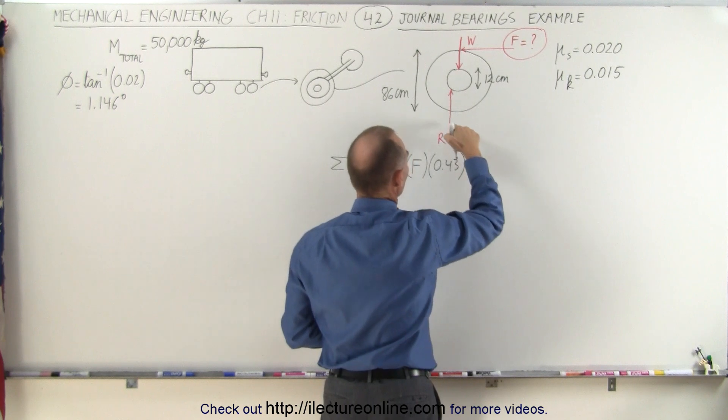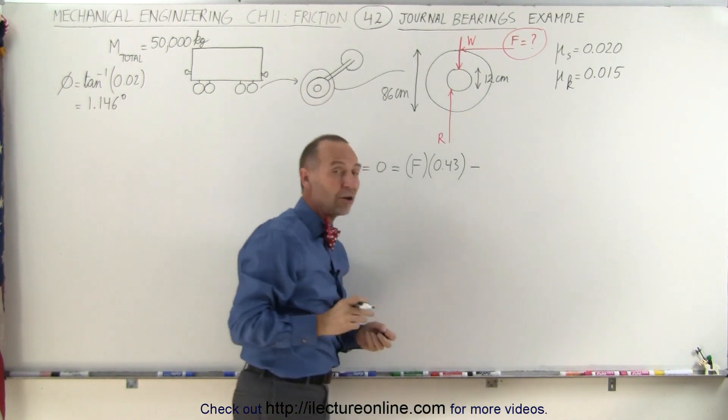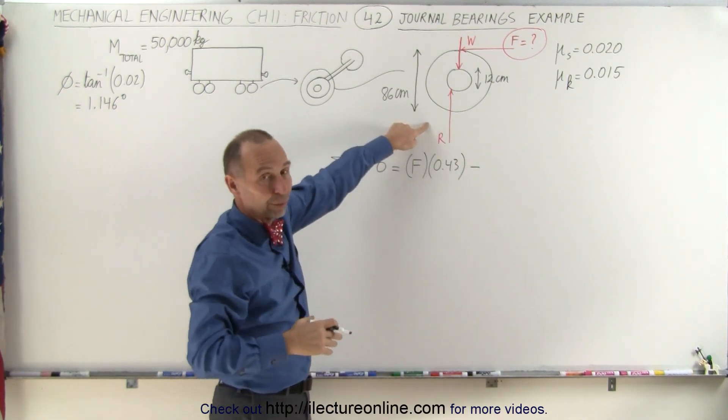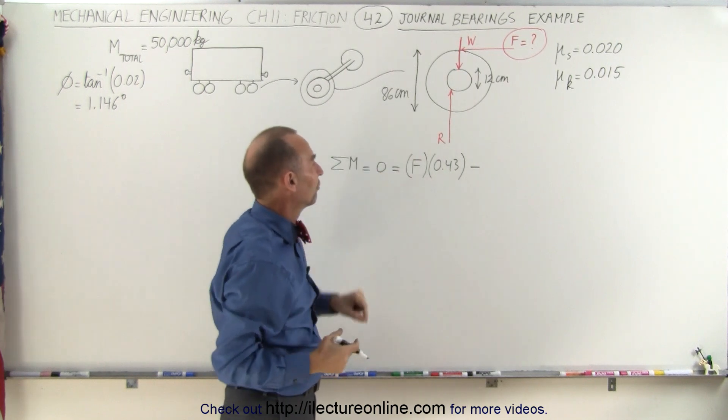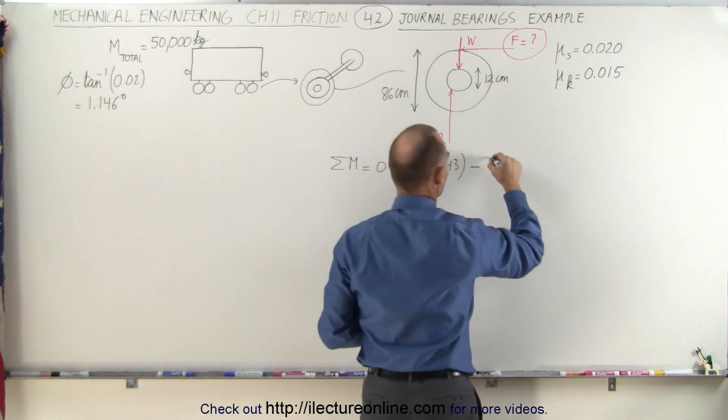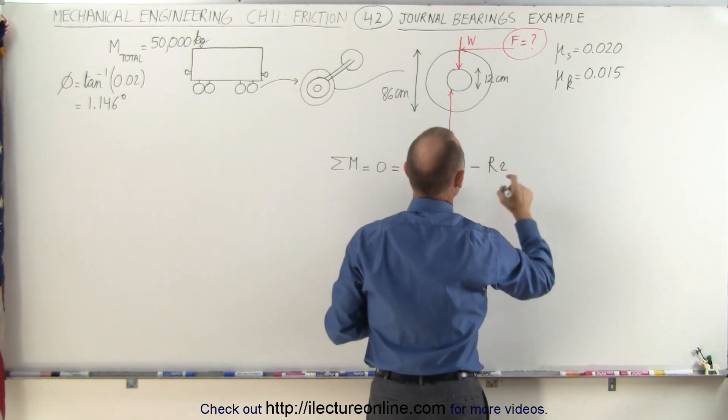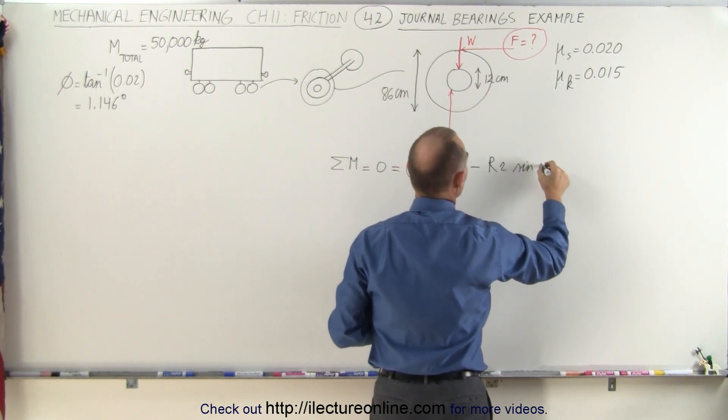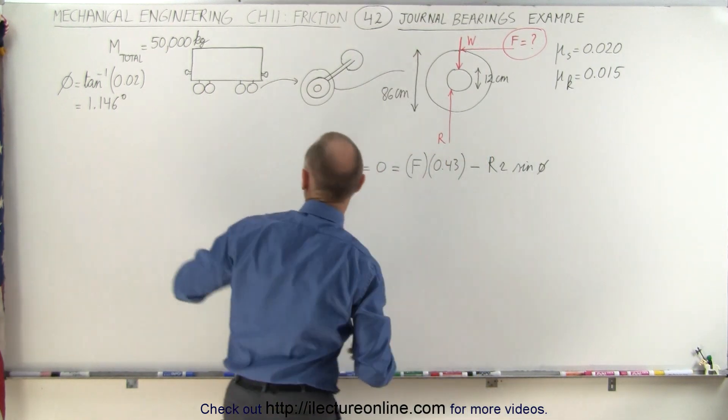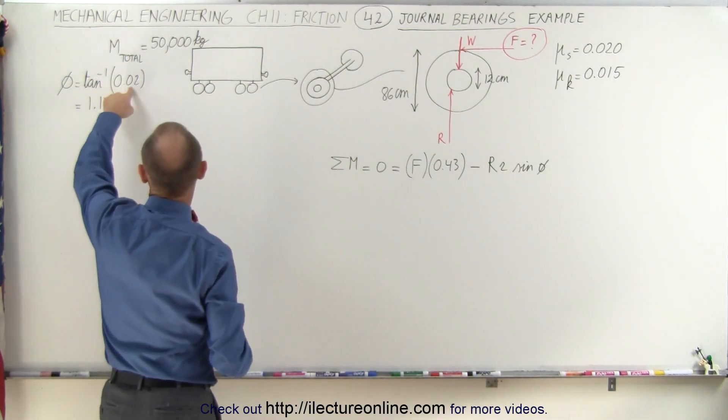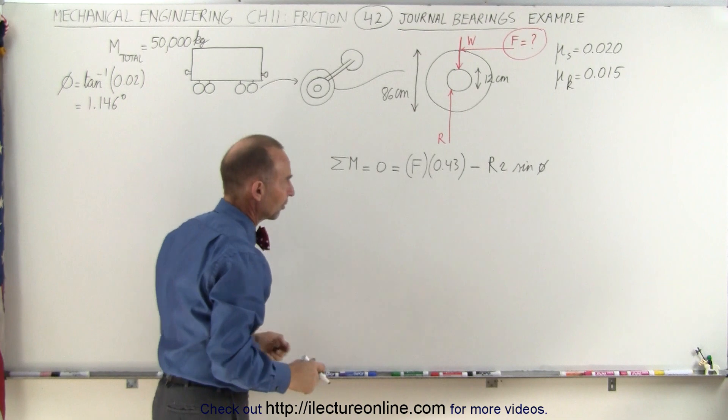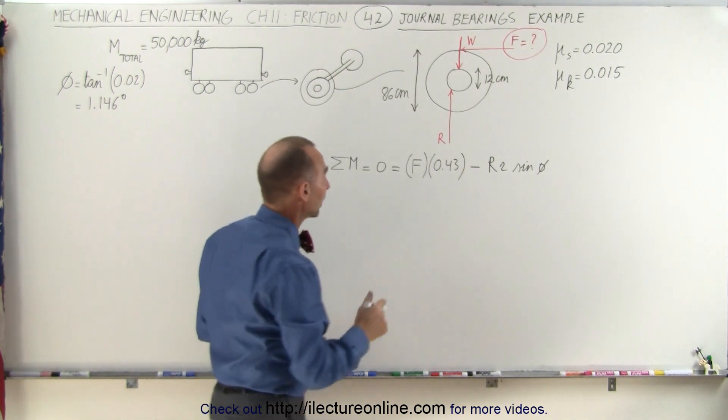Then we subtract from that the moment caused by the reaction force, which is as a result of the friction force. And so it would be R times the radius of the bearing, which is small r, times the sine of the angle phi, which is of course calculated over here. Phi is the arctangent of the coefficient of static friction. So when we plug in those numbers, we get the following.